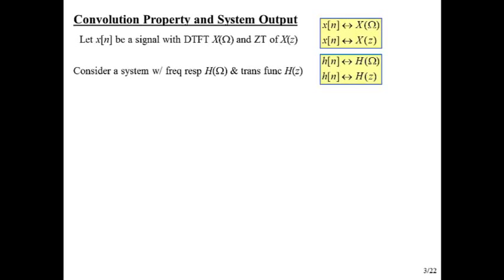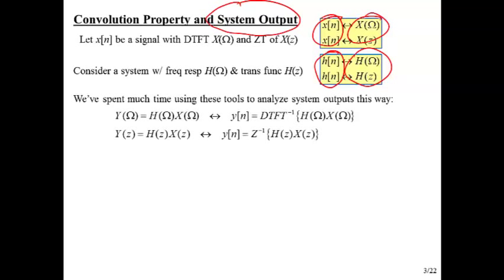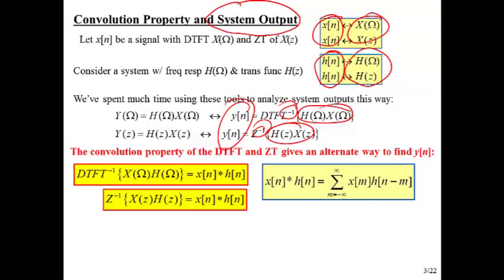This impulse response, we've also already seen that h of n is the inverse z transform of h of z, and we've also seen that h of n is the inverse DTFT of h of omega. And since we know h of z and h of omega are both descriptions of the system as well as means to find the output, so must the impulse response h of n be able to describe and allow us to solve the system.